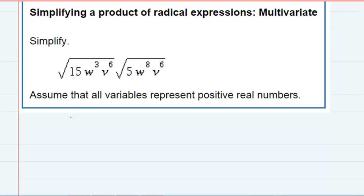This first expression, I'm going to rewrite that as 15, which I can't simplify. w to the third though, I can write that as w squared times w, and then the v to the sixth. As long as we have an even exponent, then we're going to be able to simplify it, and I'm just going to bring down the second one.